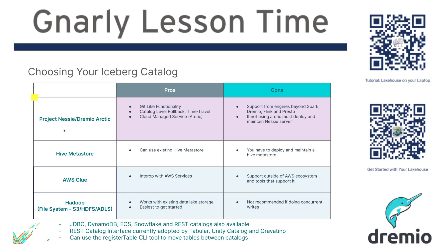Then there's the Hive Metastore. The Hive Metastore has been the standard for a long time for how you track metadata and tables on your data lake. You can use the Hive Metastore as an Apache Iceberg catalog. This is a pretty easy win if you already have a Hive Metastore running — you can just move right into using it. If you don't have one, going out of your way to deploy one is probably not the best approach, but if you have one, it becomes the path of least resistance.